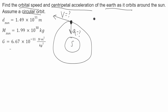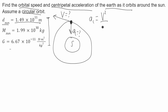I'll start with the centripetal acceleration. AC is equal to v squared over r, where r will be the radius it's traveling, which is the distance from the sun to the Earth. That's given as d of the sun: 1.49 times 10 to the 11 meters. So I'll write d sun here.